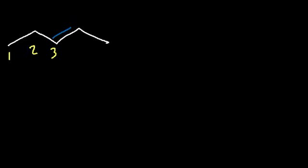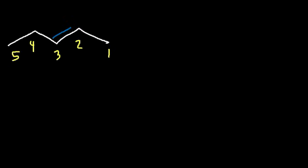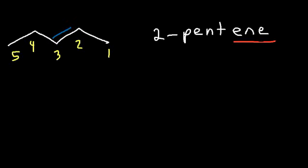Now what about this example? Should we count from the left side or from the right side? If we count from the left, the alkene is on carbon 3. But if we count from the right, it's on carbon 2. You want to count in such a way that you get the lower numbers. So this is going to be called 2-pentene since we have a 5-carbon chain. Don't forget to add the suffix "-ene" for alkenes whenever you have a double bond.